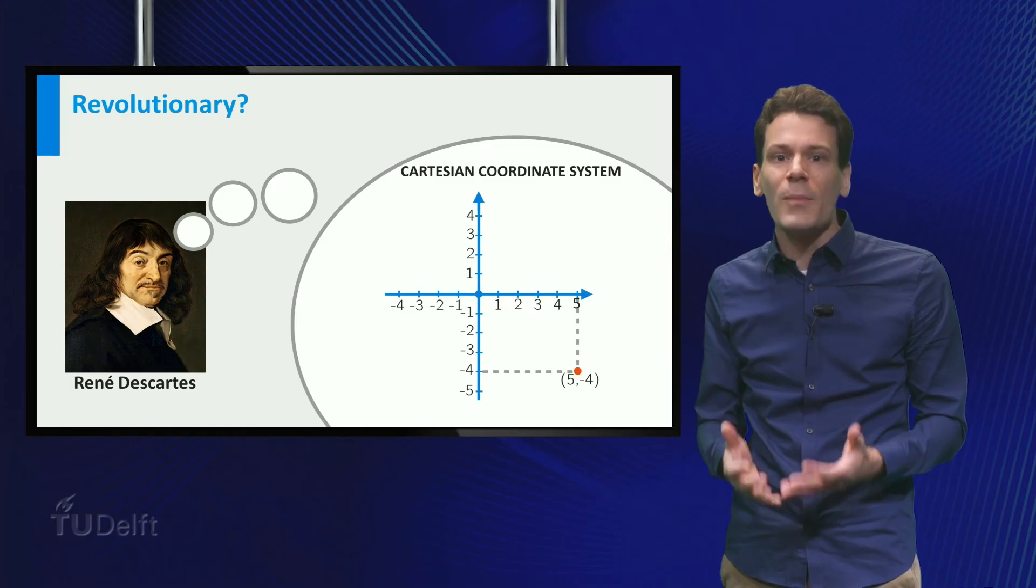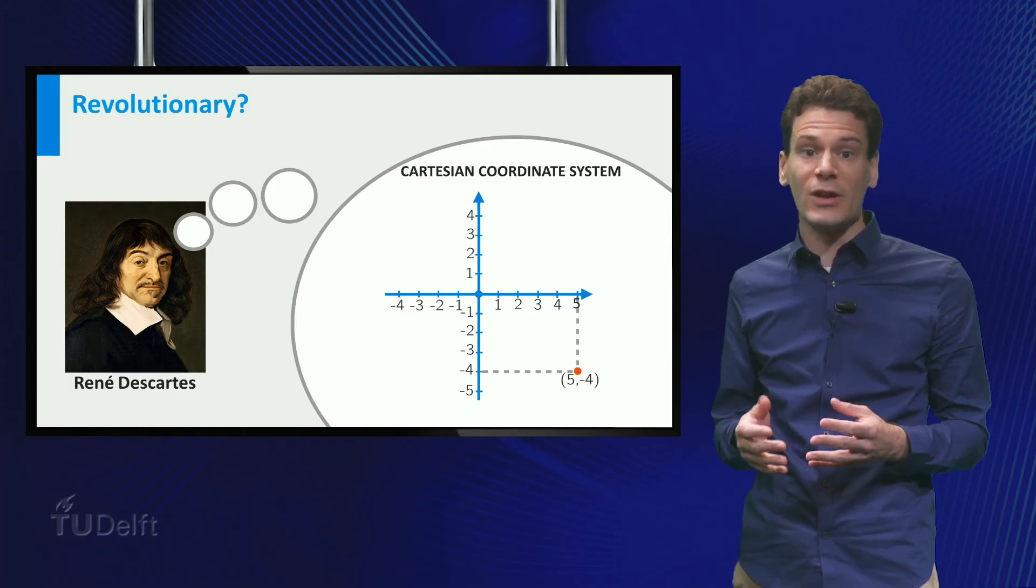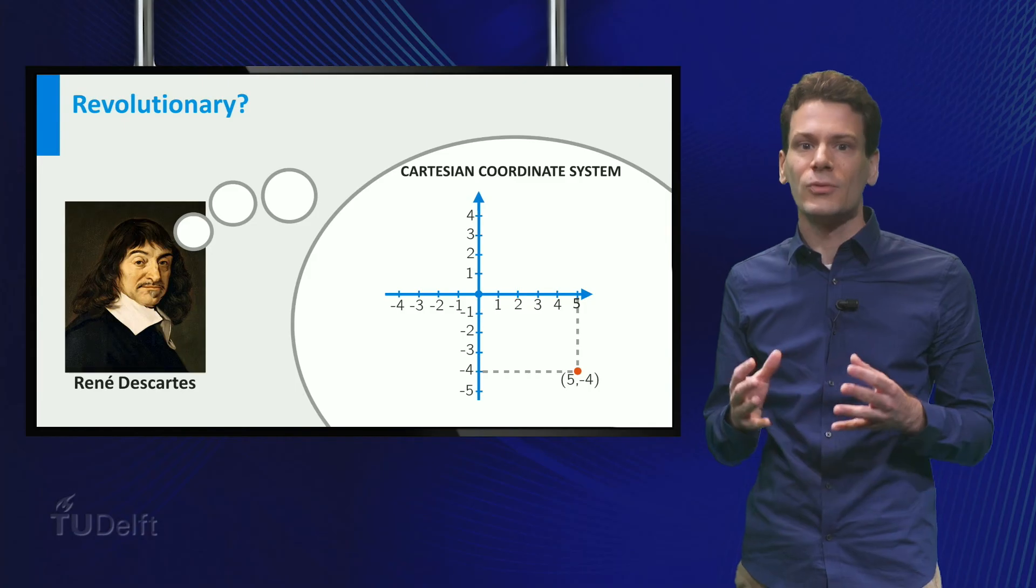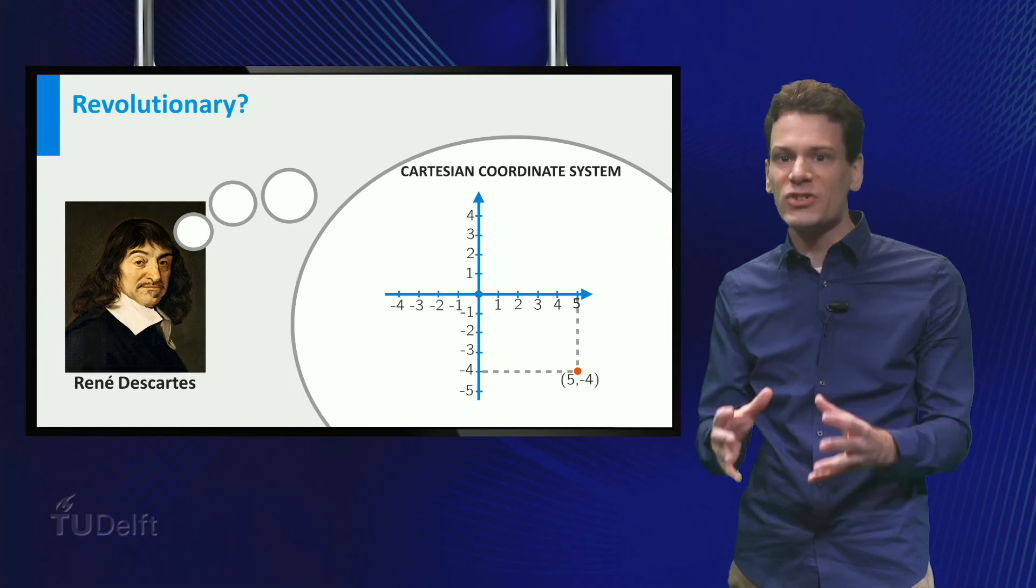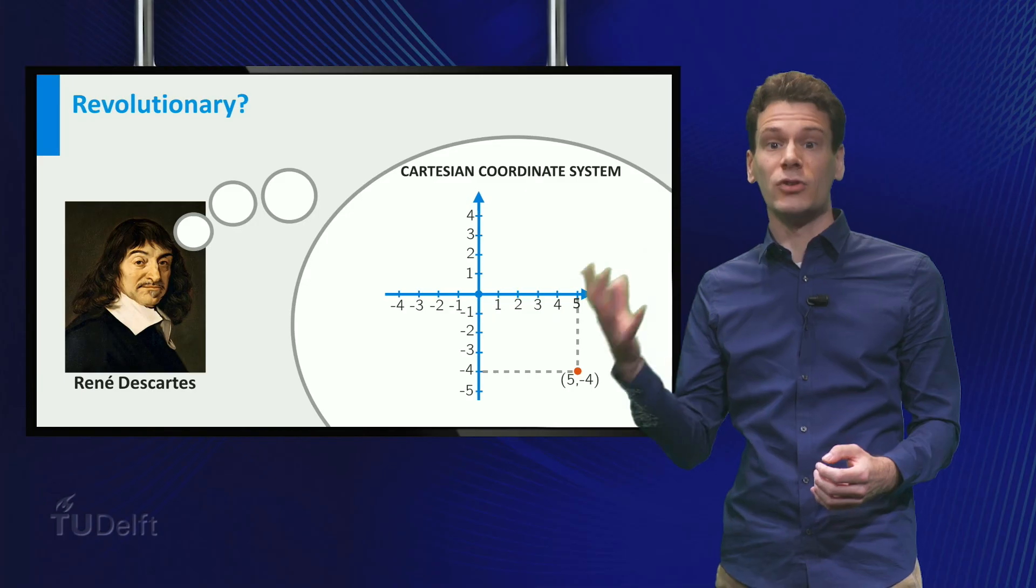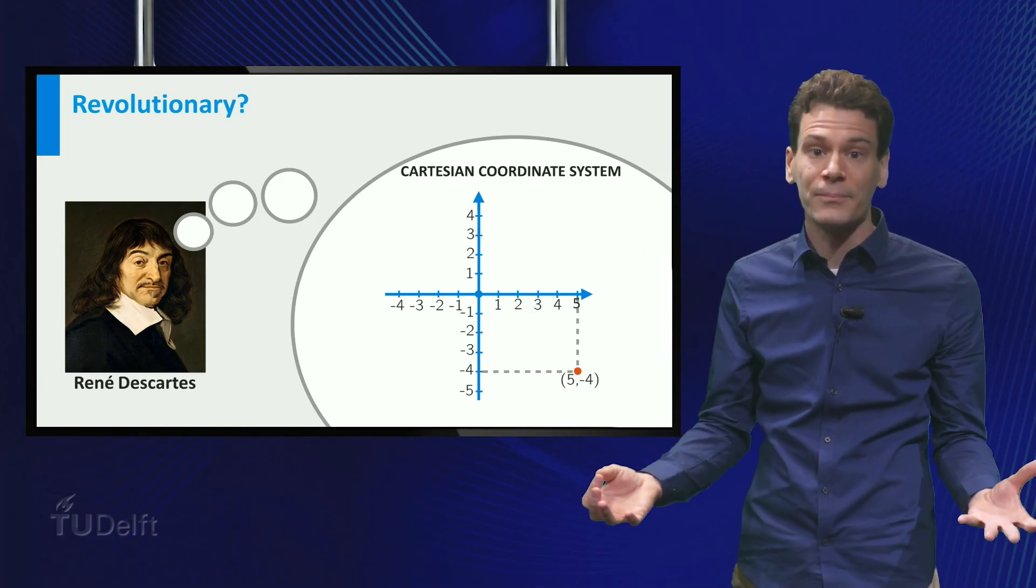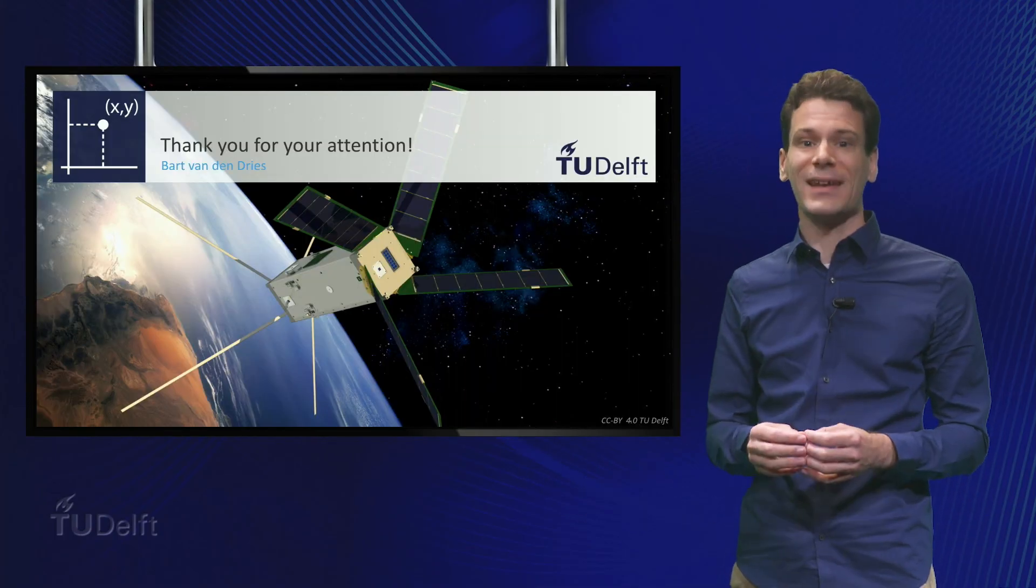Coordinates are so common nowadays that you probably wonder why they were so revolutionary in the 17th century. The reason is that this concept bridged the gap between two very different fields of mathematics: geometry and algebra. You will see more about that in the next video.